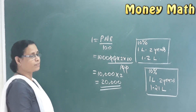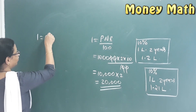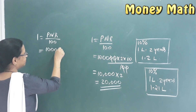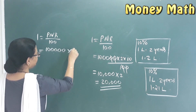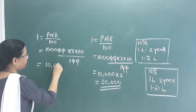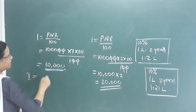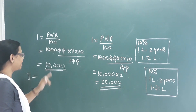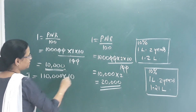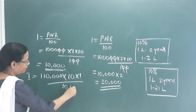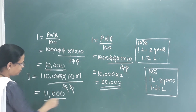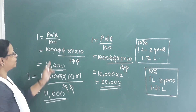Now let's understand the bank deposit using compound interest. Using I = PNR/100 for the first year: the interest for year one is 10,000. This 10,000 is added to the principal for next year. So the new principal is 1,10,000. Into 10% into one year, divided by 100 gives us 11,000. That 11,000 is our second year interest.